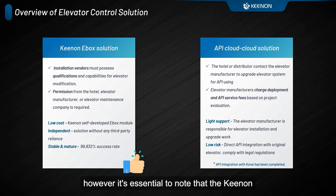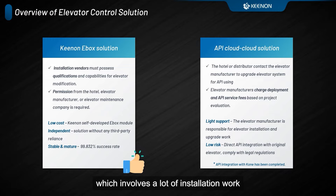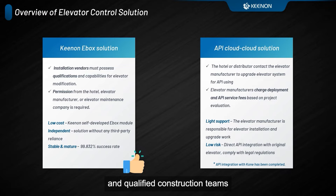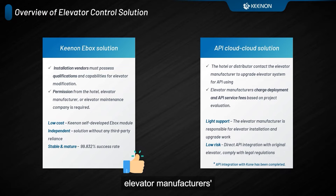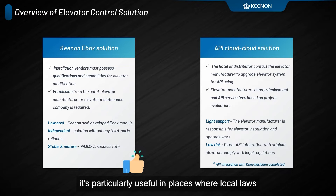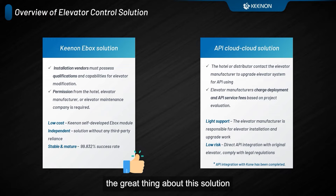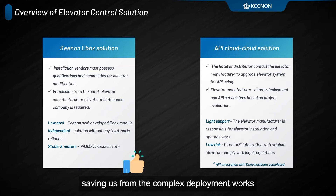However, it's essential to note that the Kenan EBOX Solution requires elevator modification and circuit braking, which involves a lot of installation work. The installation and deployment should be carried out by local and qualified construction teams specializing in elevator modifications. The API Solution is a way where we connect our cloud with the elevator manufacturer's cloud using a set of API instructions. It's particularly useful in places where local laws don't allow elevator changes. The great thing about this solution is that it doesn't require any elevator modification works, saving us from complex deployment work.